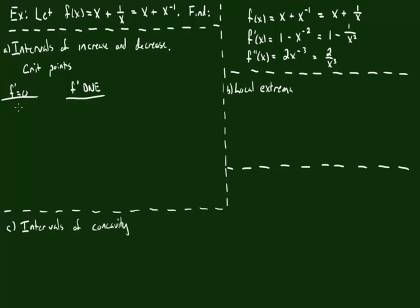Let's find out where the derivative is equal to 0 first. That means 1 minus 1 over x squared equals 0. This is just plain algebra: 1 equals 1 over x squared, which means x squared equals 1, meaning x equals plus or minus 1. So we have two critical points where the derivative is 0.